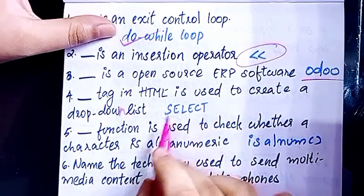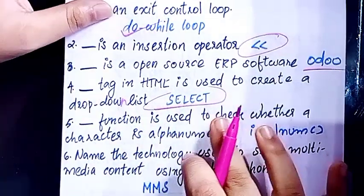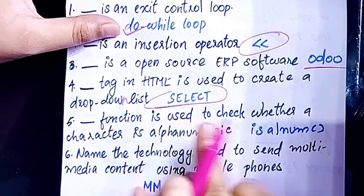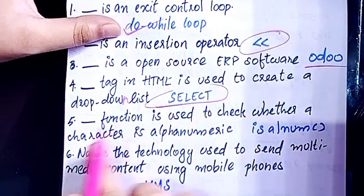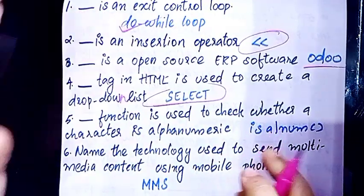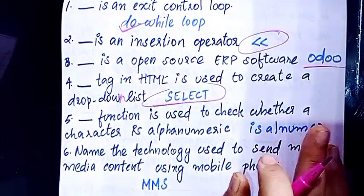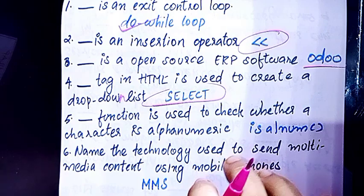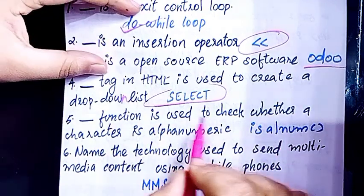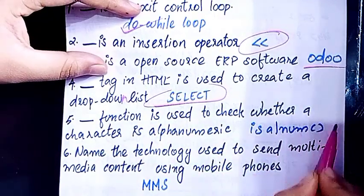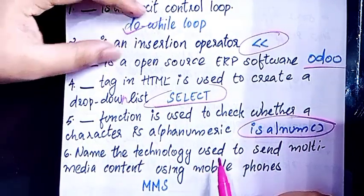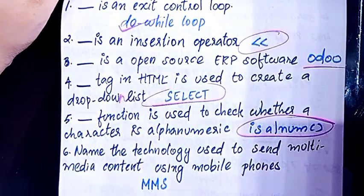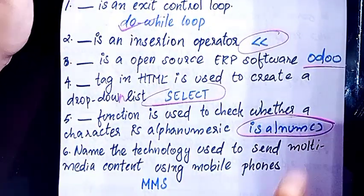The select tag is used in the drop-down list. Dash is easy to check whether the character is alphanumeric. The built-in function is isalnum — alpha is all number.